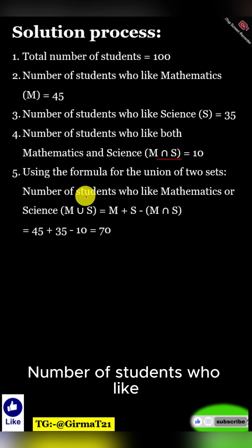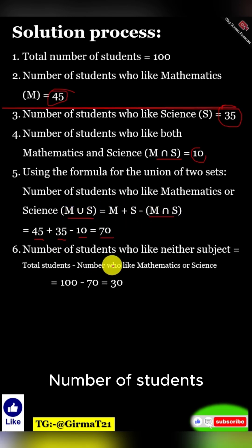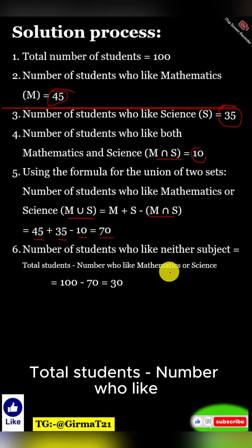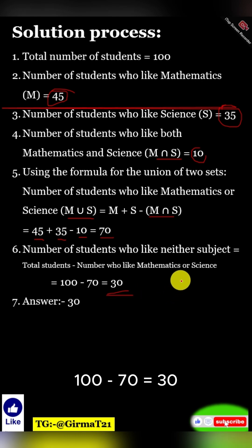number of students who like mathematics or science (M ∪ S) equals M plus S minus (M ∩ S) equals 45 plus 35 minus 10 equals 70. Number of students who like neither subject equals total students minus number who like mathematics or science equals 100 minus 70 equals 30.